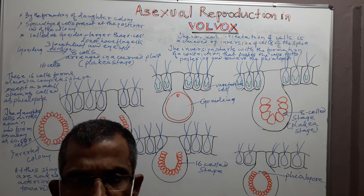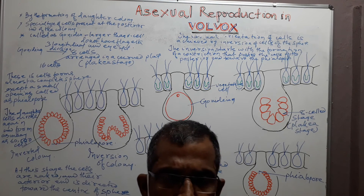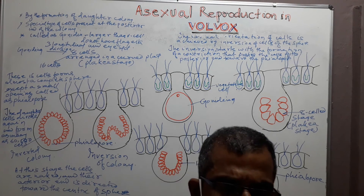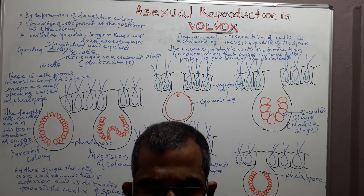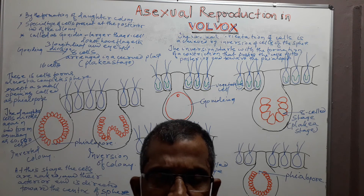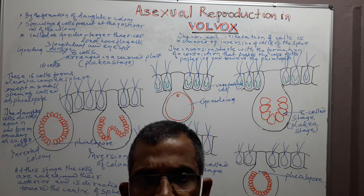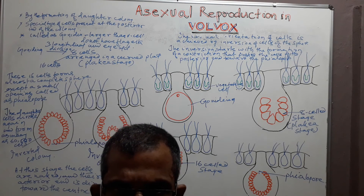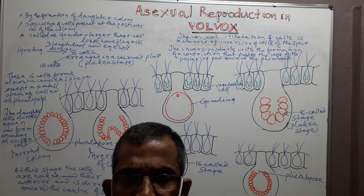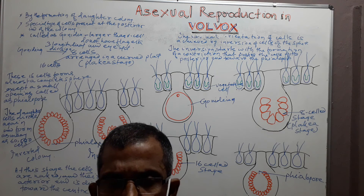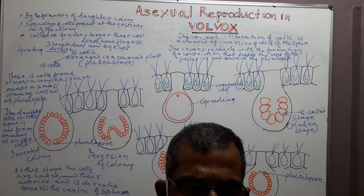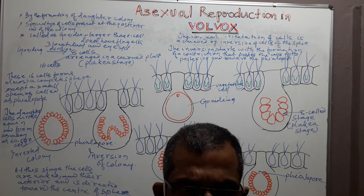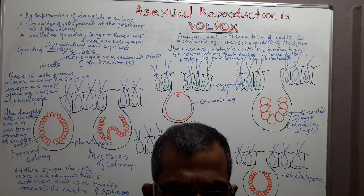To recap: asexual reproduction in Volvox occurs by the formation of daughter colony. Specialized cells present at the posterior part of the colony participate in asexual reproduction. These specialized cells are called Gonidia. The Gonidia are larger than the vegetative cells and they do not have flagella.